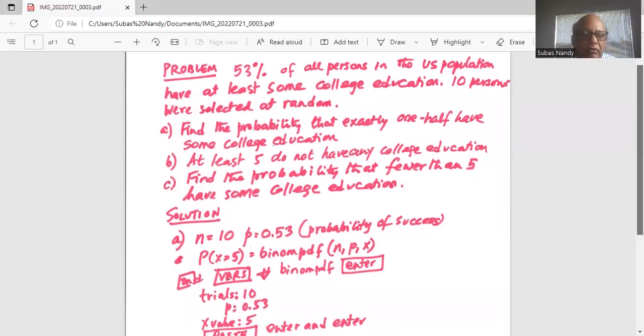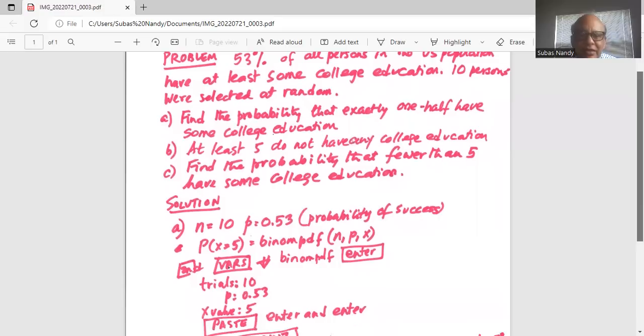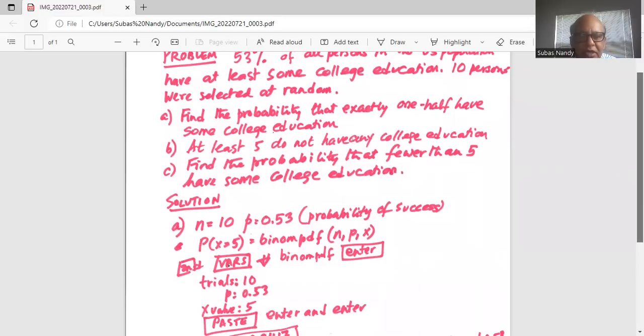So trials means n is 10, p is probability of success 0.53, and x value exactly half, exactly five.